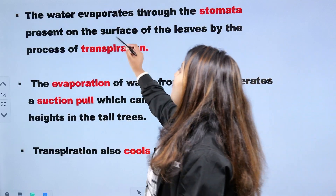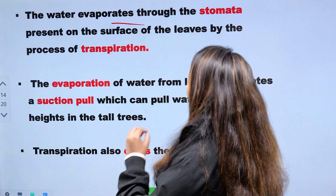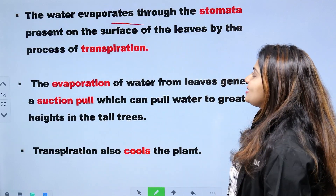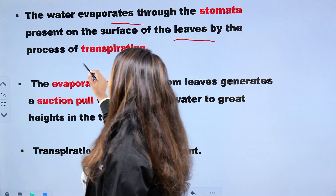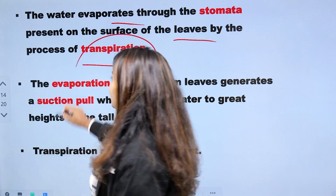By the process of transpiration, water evaporates from the surface of the leaves.